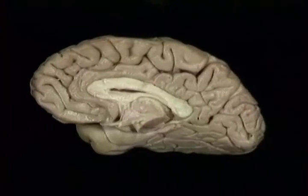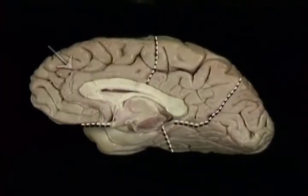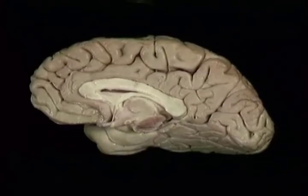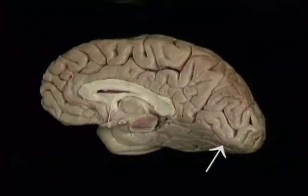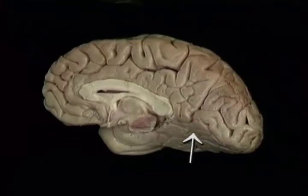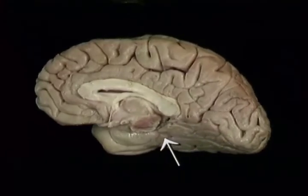Here are the four lobes on the medial surface: frontal, parietal, occipital, and temporal. The sloping underside of the occipital lobe conforms to the upward slope of the tentorium.